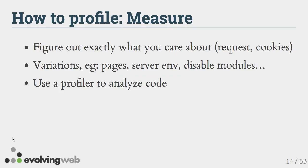You have to figure out the URL, any cookies involved. You need to compare development to production because you may have different hardware and server contention. With Drupal, one thing we like to do is disable suspect modules right away to see if they're the culprits. We always vary things up during analysis. And of course, part of measuring is using a profiler like Blackfire.